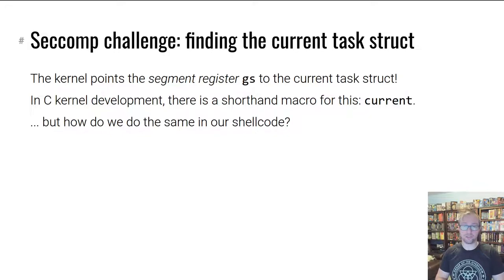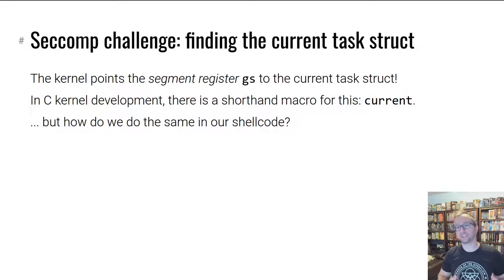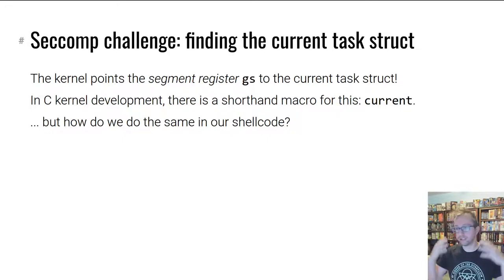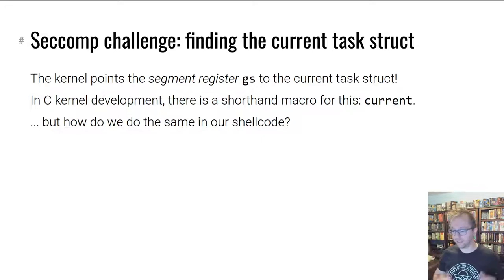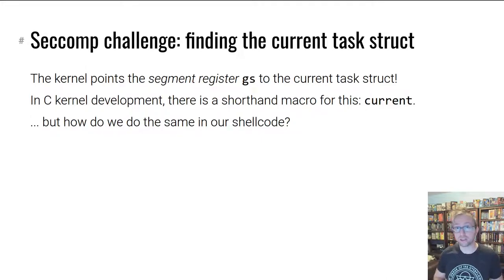So we are able to call kernel APIs — that'll let us execute run_cmd, prepare_kernel_cred, commit_creds, everything. You're good to go except for seccomp. Escaping seccomp is tricky. It requires finding and modifying structures that the kernel keeps track of for the current process — the current task_struct. Luckily, the kernel points to this struct using the GS segment register. These segment registers are a little tricky to interact with — harder than general purpose registers like RDI and RSI.